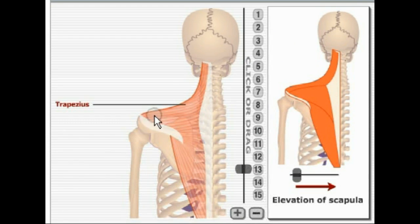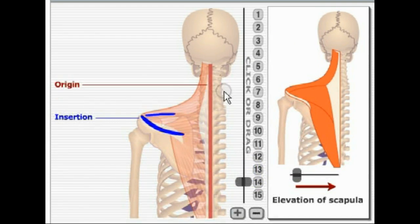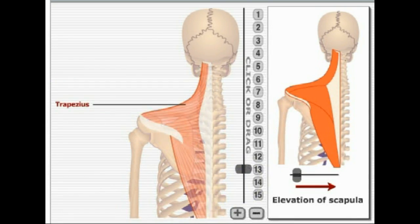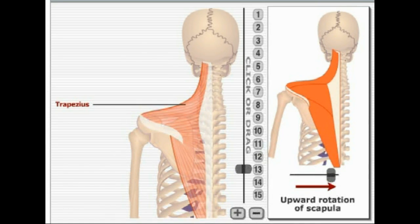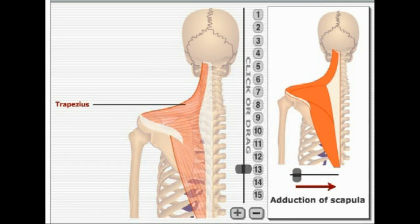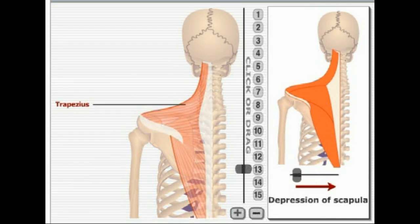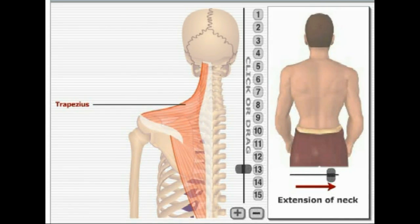Here we're looking at one of the large muscles of the back, the trapezius. It has two origins: one is the occipital bone, and two is the spinous processes of vertebral segments C7 all the way down to T12. Because this muscle is so large, it's responsible for several actions: elevation of the scapula, upward rotation of the scapula, adduction of the scapula, depression of the scapula, and extension of the neck.